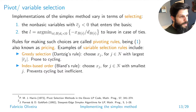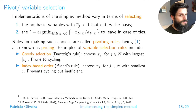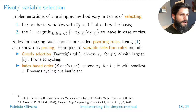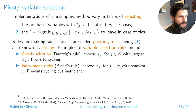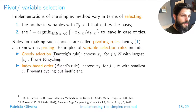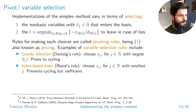Another idea that tries to fix cycling is the Bland rule. If you have multiple negative reduced costs, pick the one with the smallest cardinality index — so if C1 and C2 are both negative, pick C1 regardless of their values. This prevents cycling. Because it uses an arbitrary rule, it tends to be inefficient. There is also the lexicographical rule, which is a combination of approaches, but it's only really seen in textbooks and isn't helpful in practice — a bit more complicated without giving any implementation benefit.